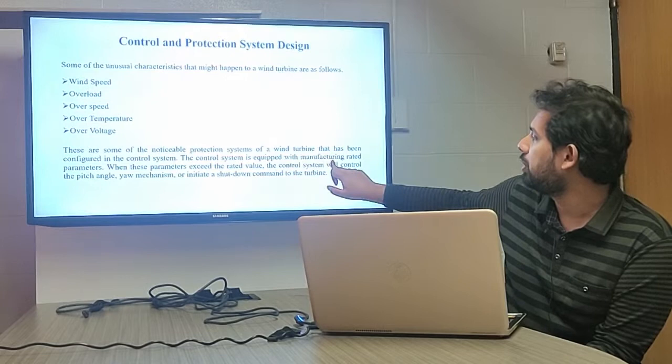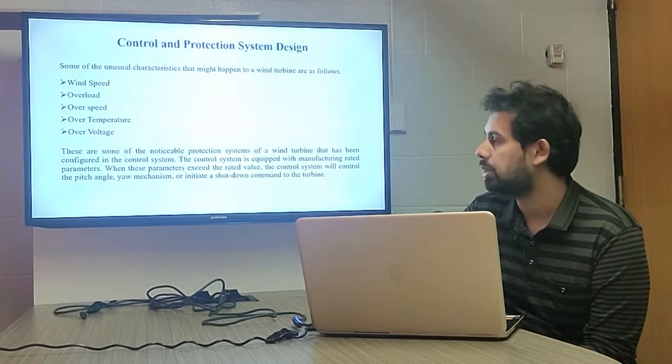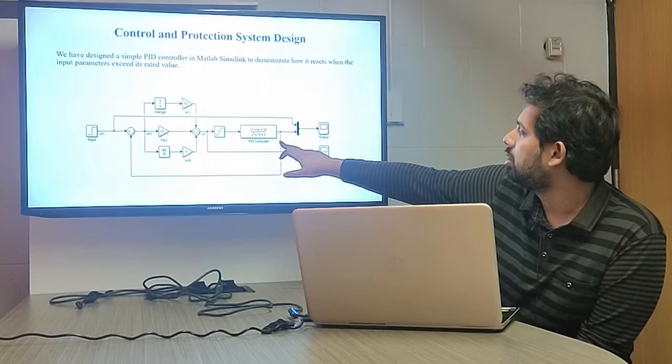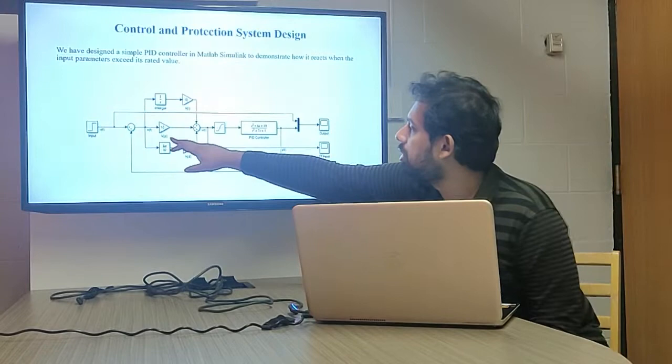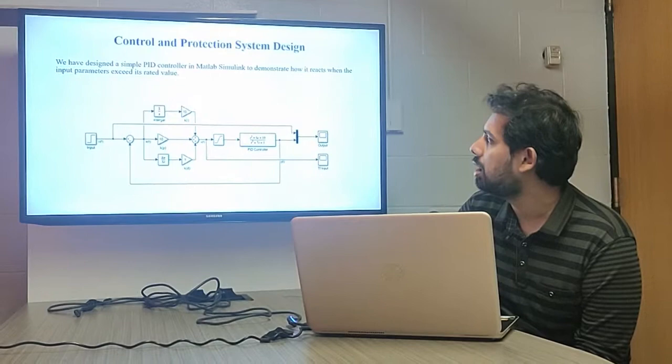The control system is equipped with manufacturer-rated parameters. When a rated parameter is exceeded, the control system will control the pitch angle, yaw mechanism, or even initiate a total shutdown of the wind turbine. The summation block in the PID controller continuously monitors the output variables; when output variables exceed the rated value, it signals the proportional, integral, and derivative blocks to keep the output variables within the rated value.